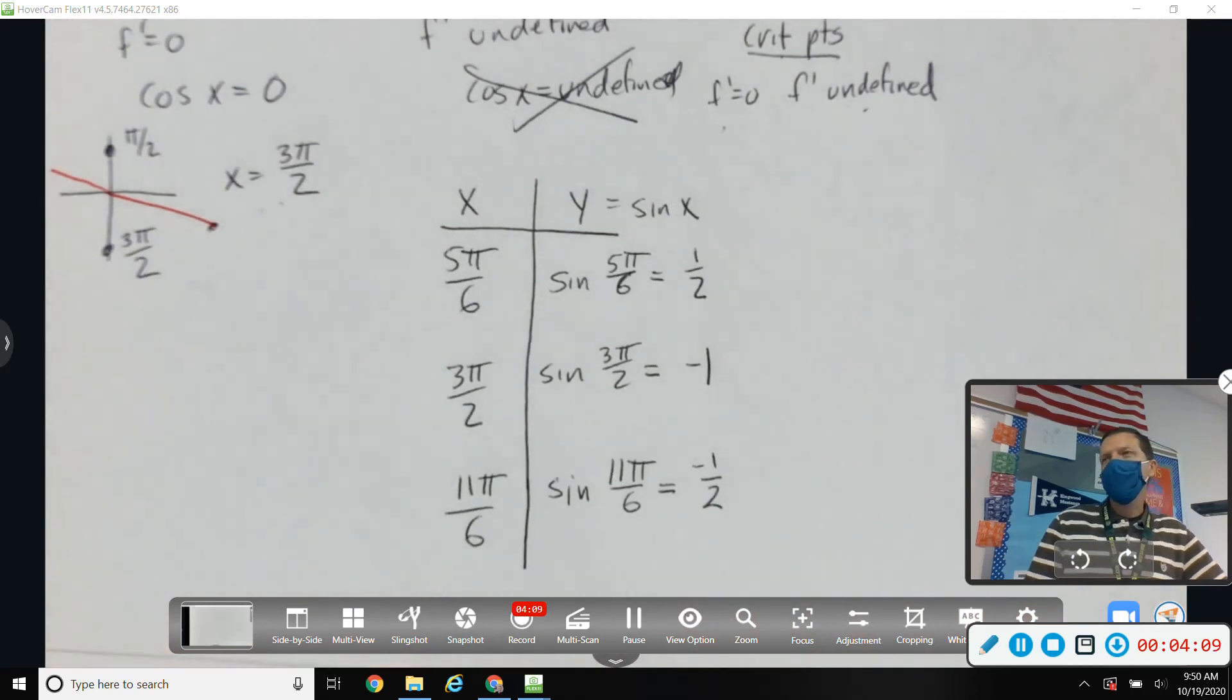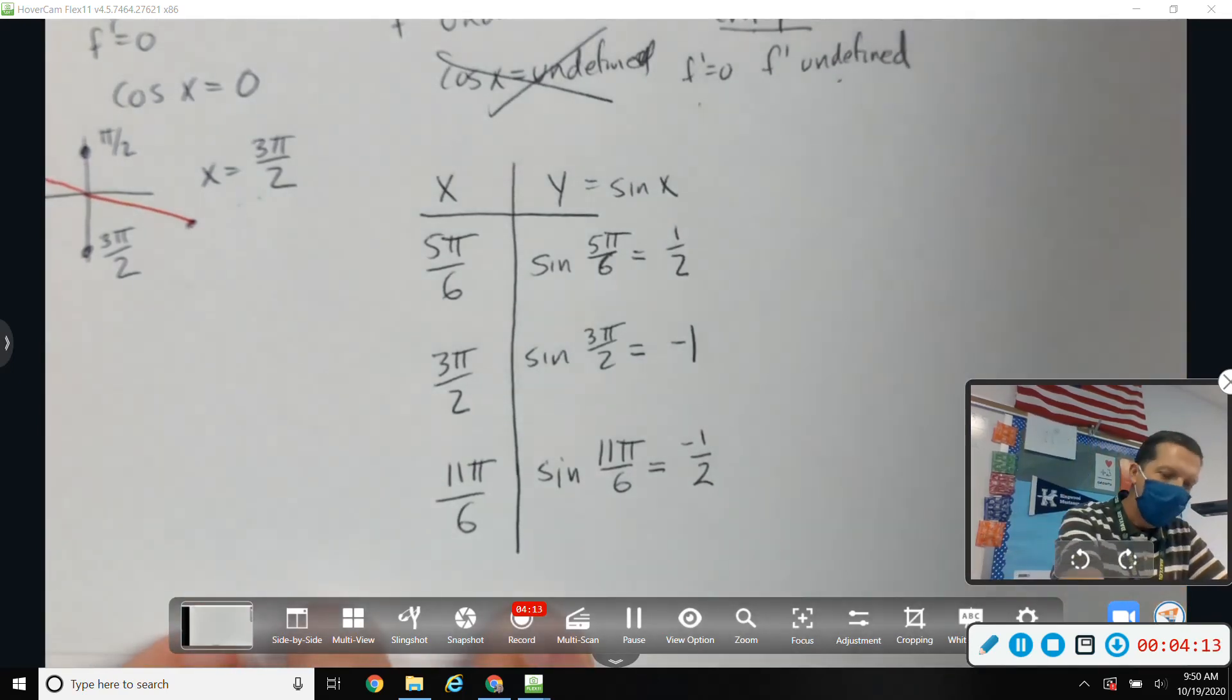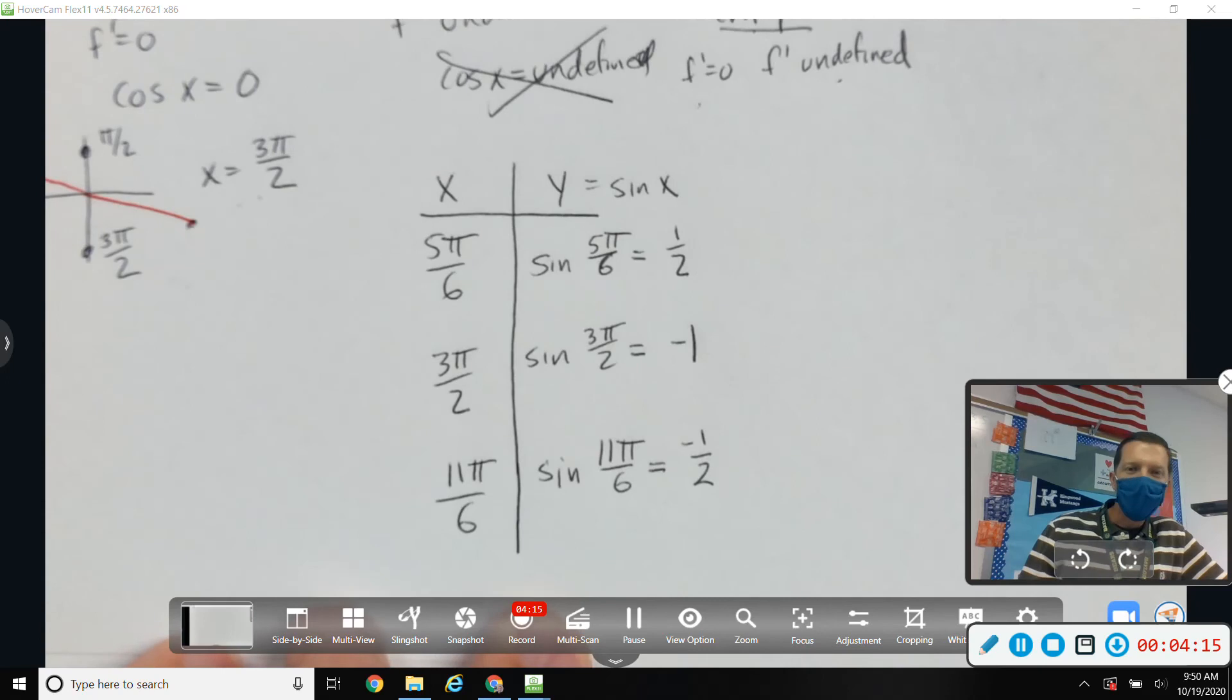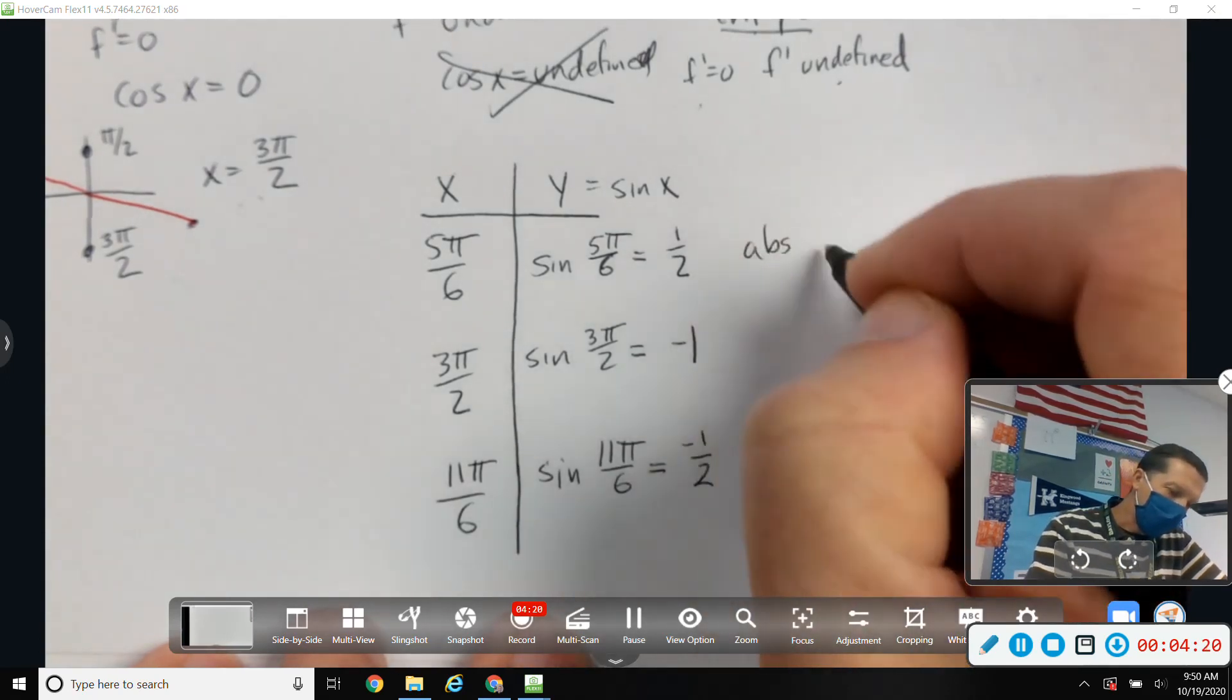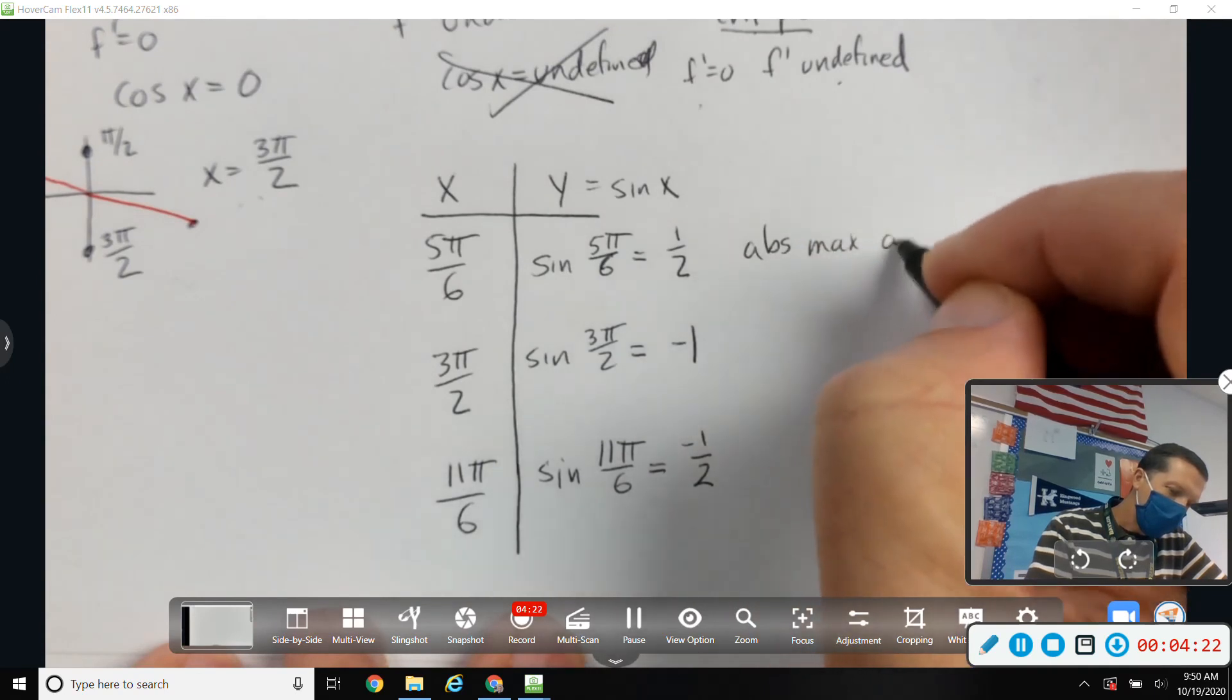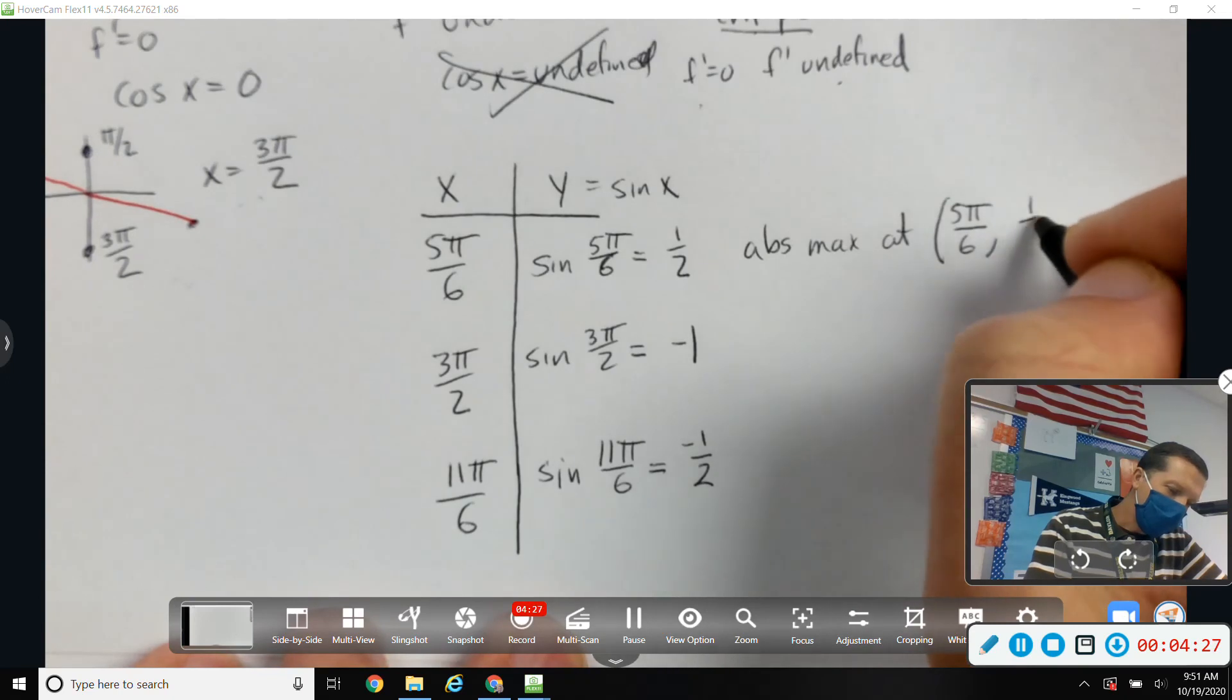Now it's an algebra one problem, like which number is biggest? It's not even algebra one, it's like elementary school stuff. The biggest number is the one half, so I've got an absolute max at five pi over six, comma, one half.